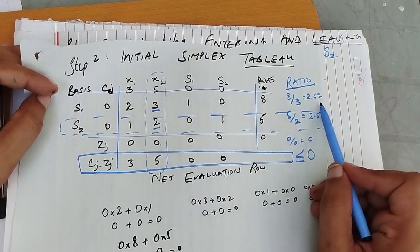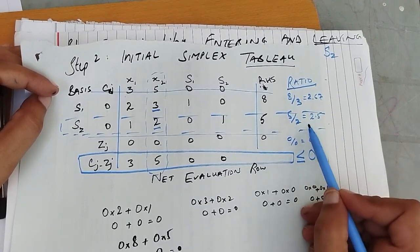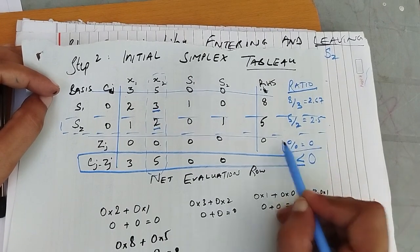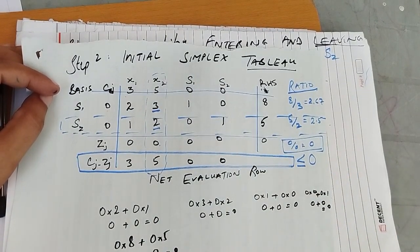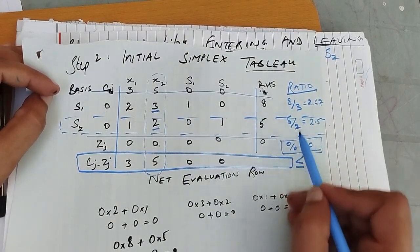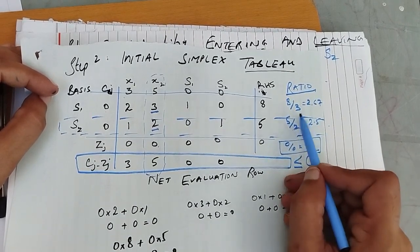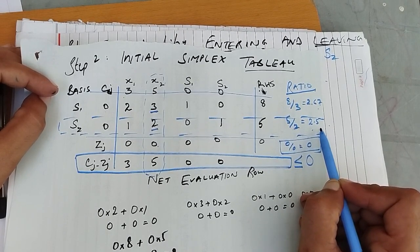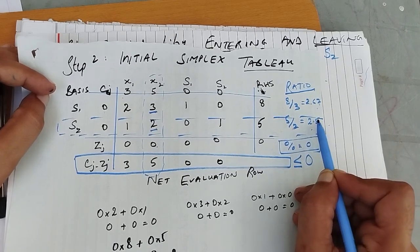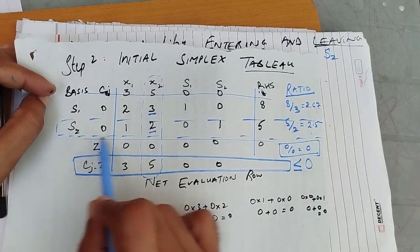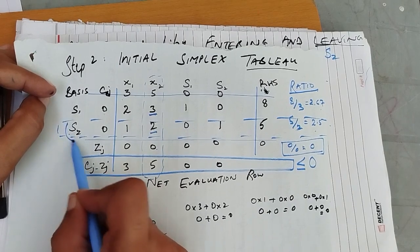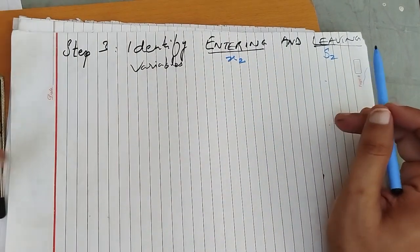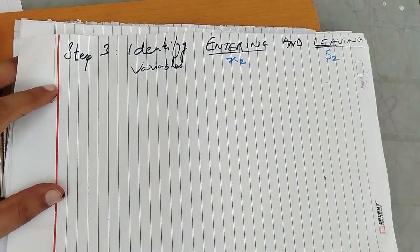Then we need to find the leaving element. For that, we take the ratio from the right-hand side: 8 divided by 3 equals 2.67, and 5 divided by 2 equals 2.5. We do not consider 0 divided by 0 for the pivot row. Among the constraint values, 2.5 is the smallest, so that row becomes the pivot row, and s2 is the leaving variable. We are done with this.